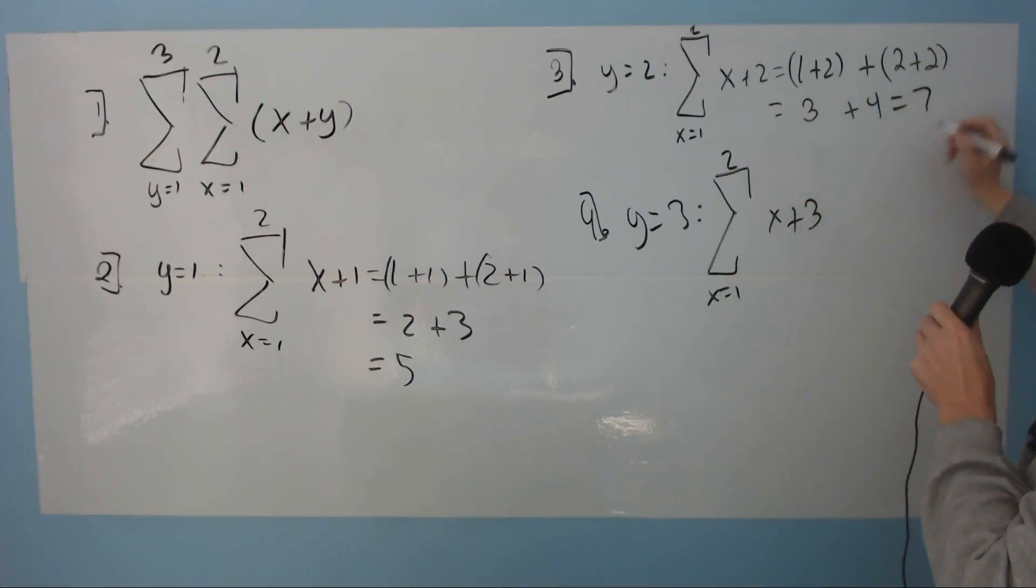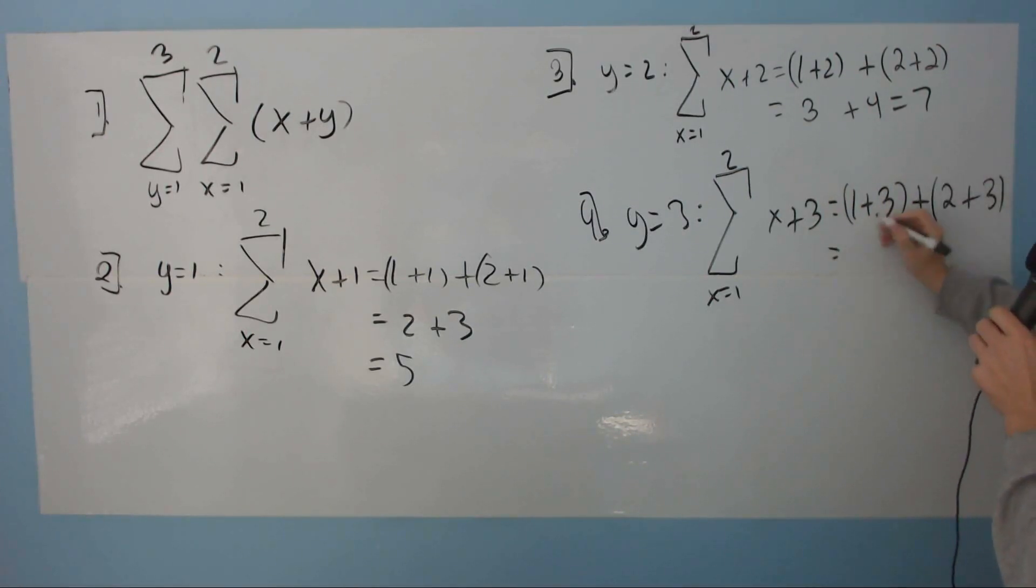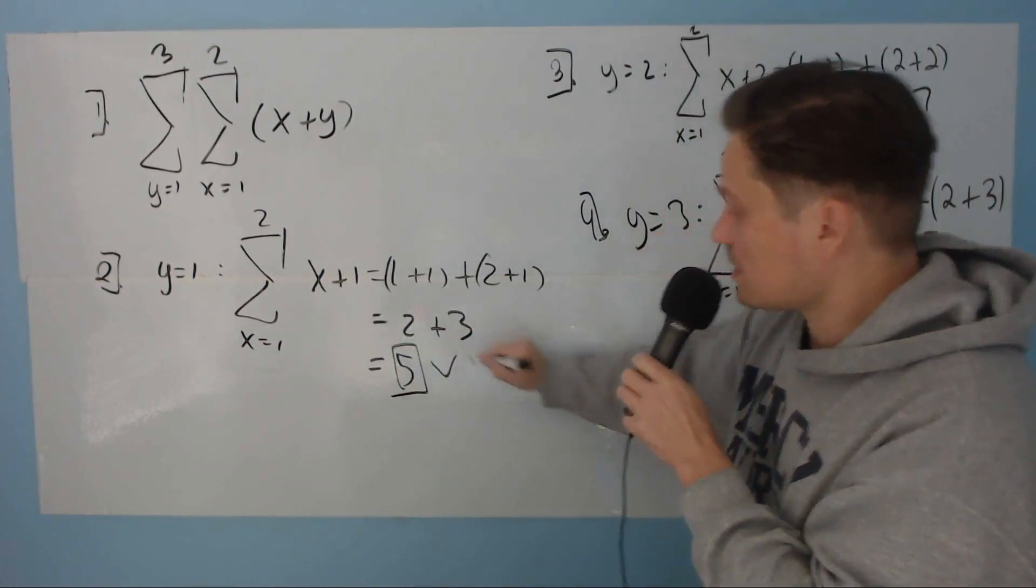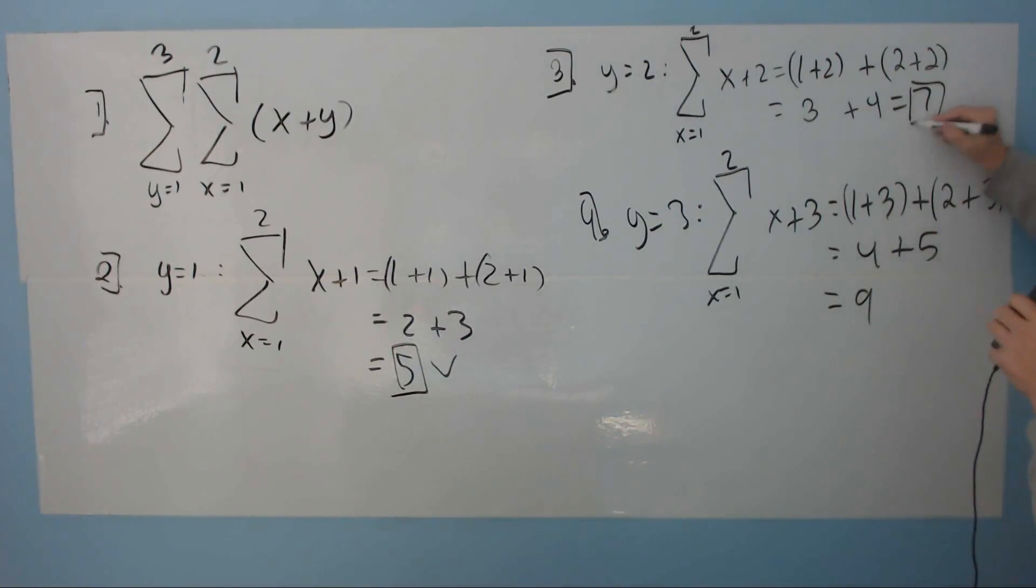So when I do that, I will have the following expression now: x plus 3. And again, x goes from 1 up to 2 because we designed it that way. Let's carry this work out. So now this is going to be 1 plus 3, and then plus 2 plus 3. Simplify that. So this is 4 plus 5, which at the end gives 9. So I have all of these sums formed. I need this 5, I need this 7, and I need this 9. And then I can just add them all up, and that's it.